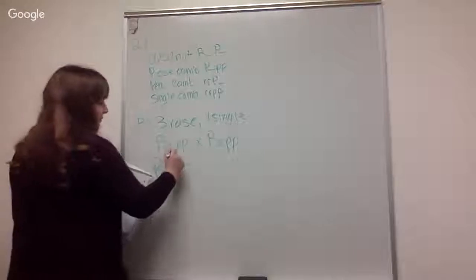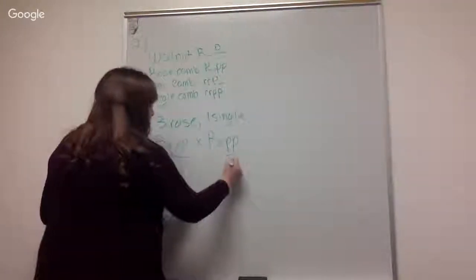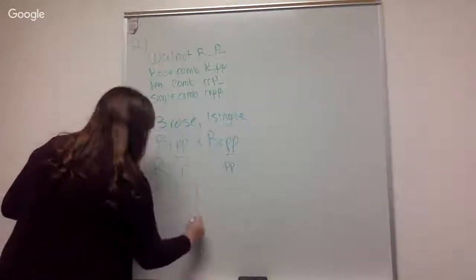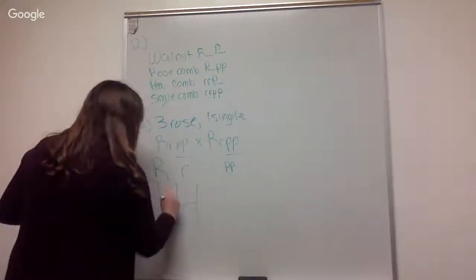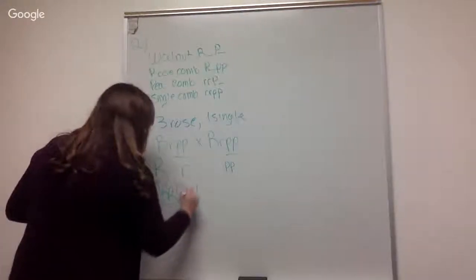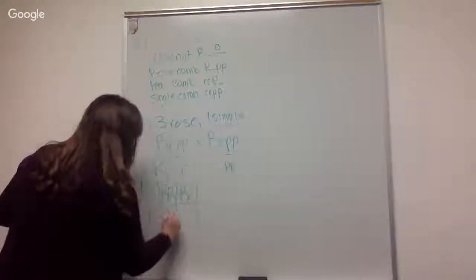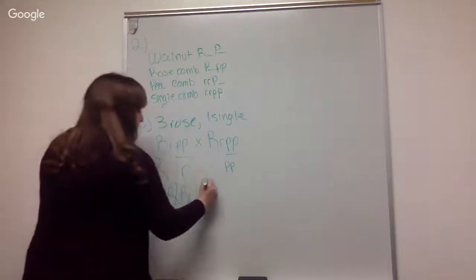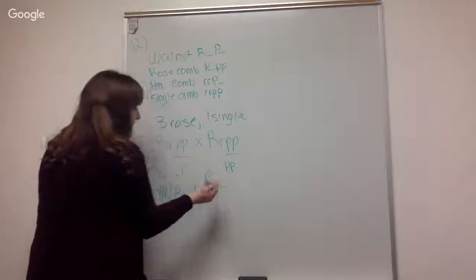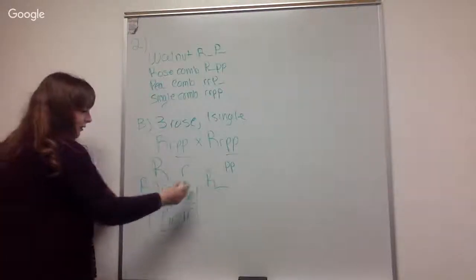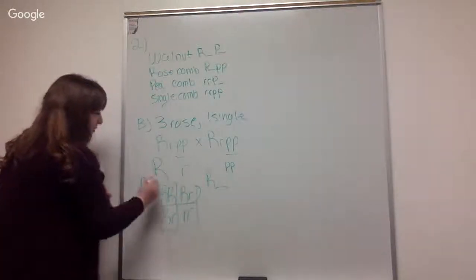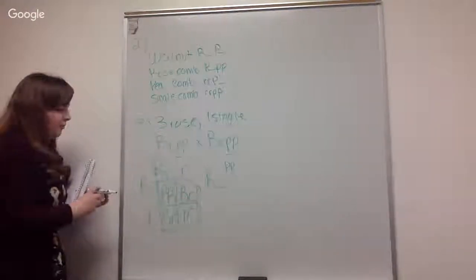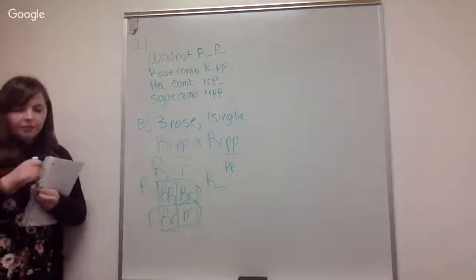It doesn't matter, the P's don't matter because you're always going to get the little P's. Because rose combs are this, any of the types with the large R are going to be rose combs, and then the recessive homozygous is going to be the single comb. So it's a three to one ratio, yay.